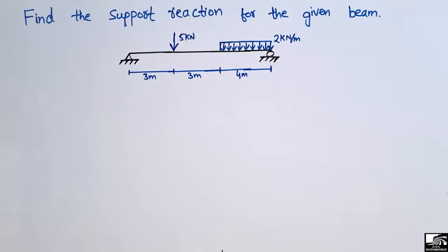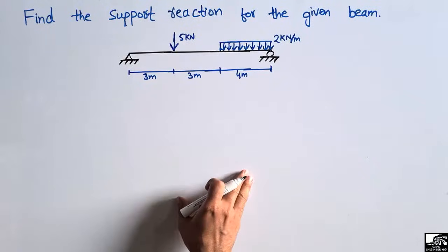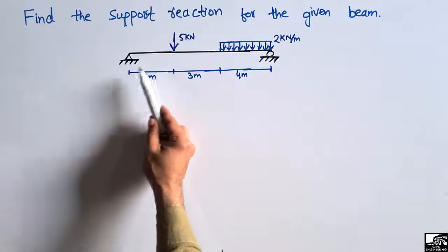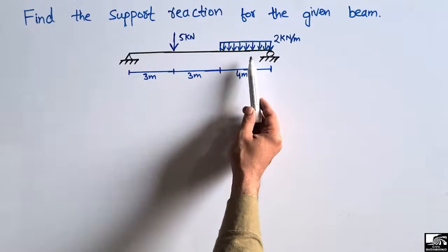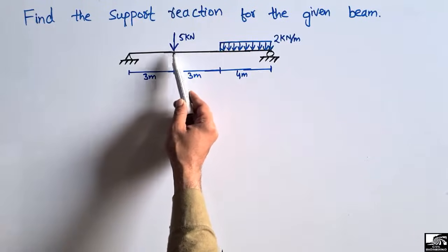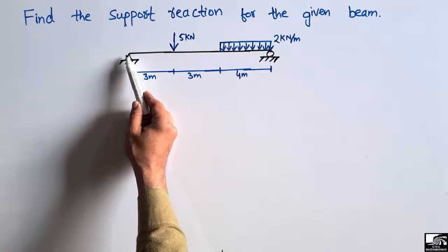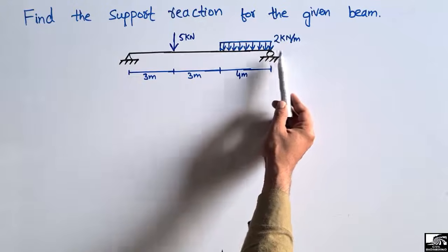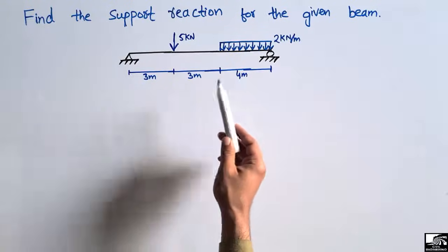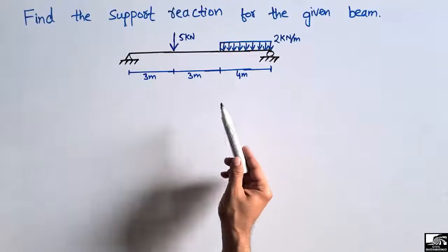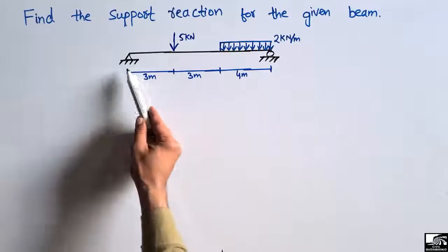Hello guys, welcome back to a civil engineering YouTube channel. Please subscribe for daily civil engineering videos. In this lecture, we are going to find out the support reactions for a given simply supported beam. There are two loads: a concentrated load of 5 kilonewtons acting at 3 meters from the hinge support, and a uniformly distributed load of 2 kilonewtons per meter over 4 meters. We will also verify our support reactions once found.